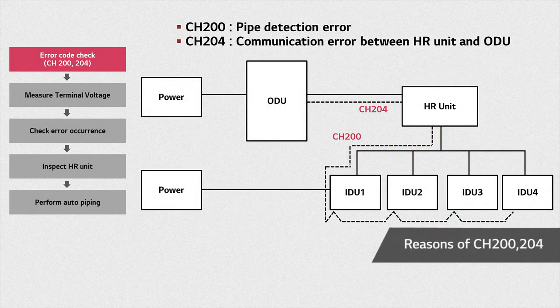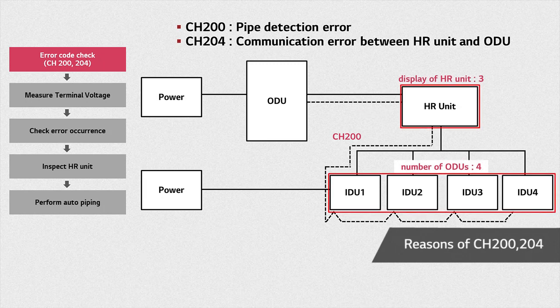While CH200 is a piping detection error, CH204 refers to a communication error between the HR unit and the ODU. Error CH200 occurs when, after auto-piping, the number of indoor units detected is different from the number of communicating indoor units. This miscount occurs mainly when the DIP switch setting has been wrongly done. Another reason is failure in the HR unit's communication cable and power cable, or a malfunction in the HR unit's PCB.